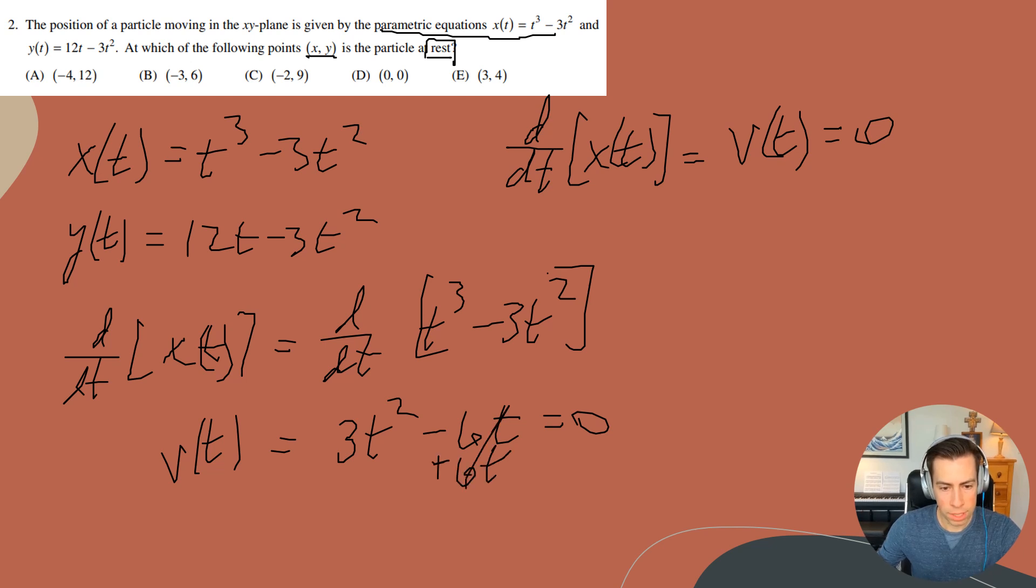I'll add 6t to both sides, then I'll get 3t squared equals 6t. I can divide both sides by t, cancel out a t, and I will get 3t equals 6. Now I'll divide both sides by 3, and I will be left with t equals 2.